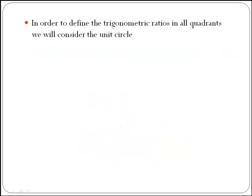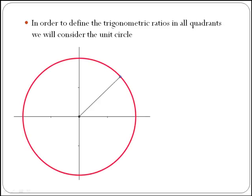In order to define the trigonometric ratios in all quadrants, we will consider the unit circle. The unit circle is a circle centered at the origin with radius equal to 1.